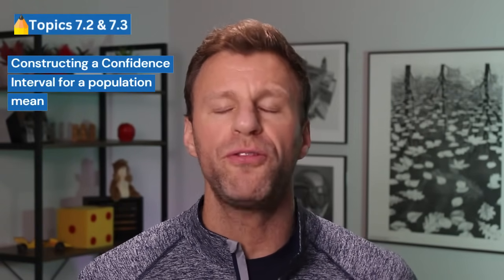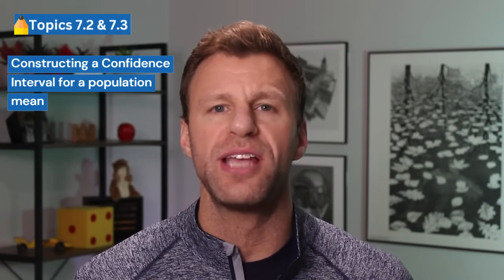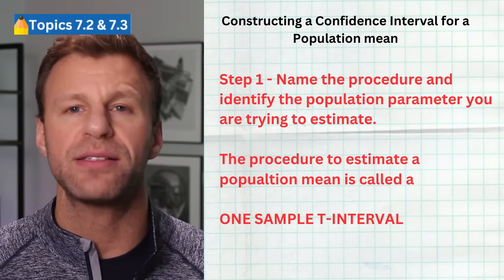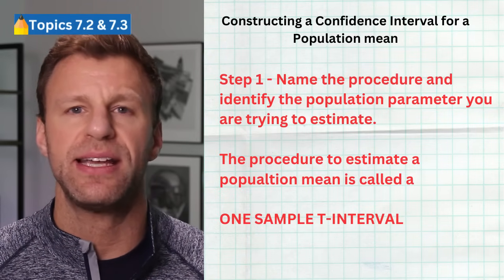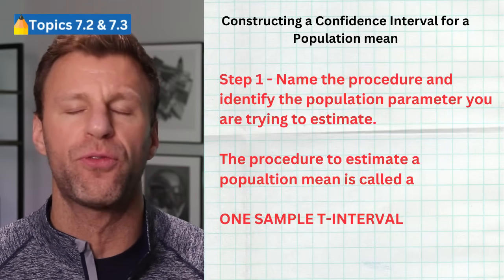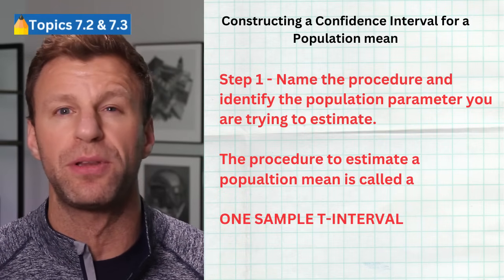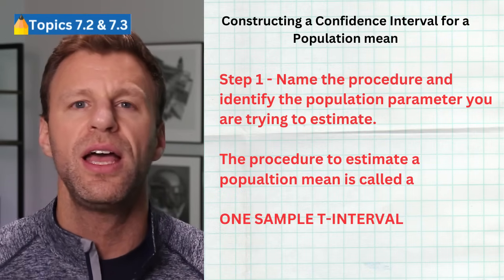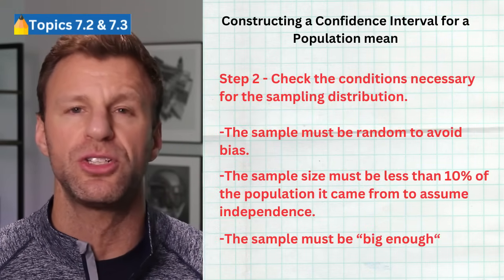Topics 7.2 and 7.3 are all focused on constructing a confidence interval to find a population mean. It's a four-step process. Step one is naming the test: it's a one-sample T-interval for a population mean, and you want to give context as to what population mean you're trying to find. Step two is checking the conditions to ensure that our sampling distribution can be constructed.